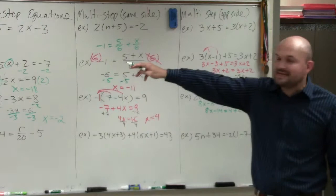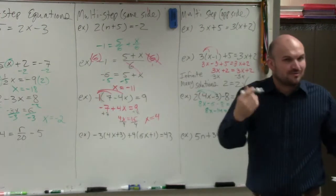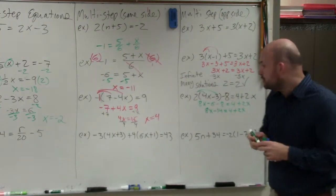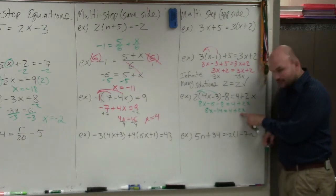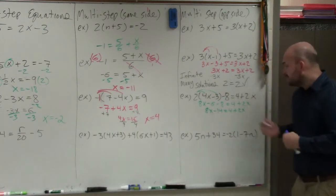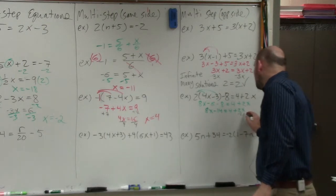So what I was saying is now we want to obtain the variable on the same side. My hint was make the variable always positive. You want to get rid of the variable that has the smaller value, which in this case, you can see that 2x is smaller than 8x. So I am going to get rid of 2x.